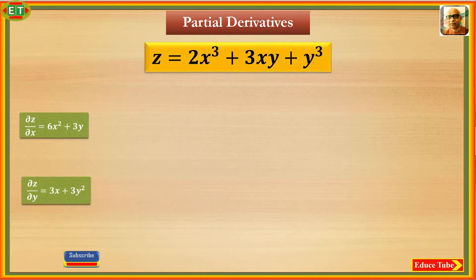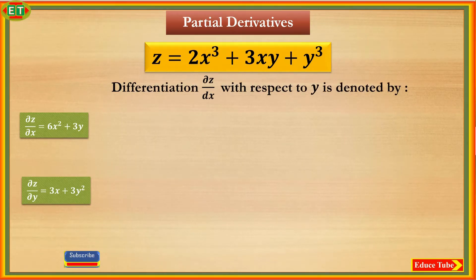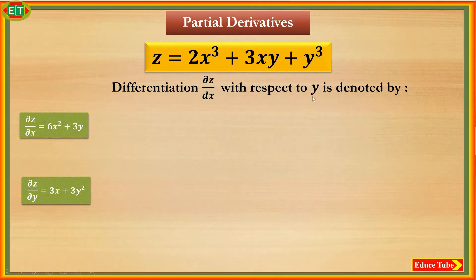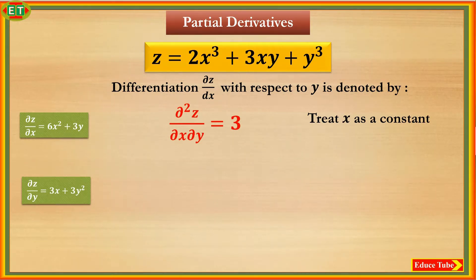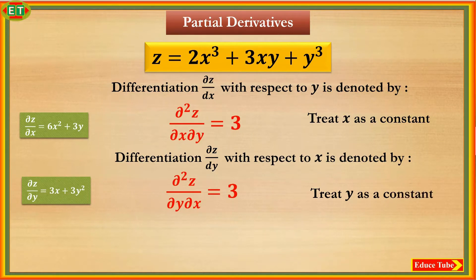These two first derivatives and the equation z equal to 2x cubed plus 3xy plus y cubed can also be differentiated either with respect to x or with respect to y to obtain mixed second partial derivatives. Differentiating ∂z/∂x with respect to y gives ∂²z/∂x∂y equal to 3, treating x as a constant. Differentiating ∂z/∂y with respect to x gives ∂²z/∂y∂x equal to 3, treating y as a constant.